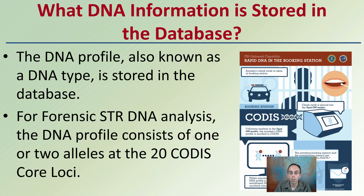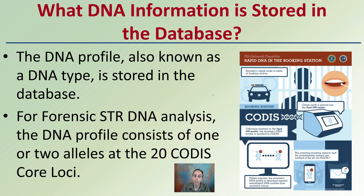What DNA information is actually stored in the database? The DNA profile, also known as a DNA type, is stored in the database. For forensics, STR — short tandem repeats — DNA analysis for a DNA profile consists of one or two alleles at the 20 CODIS core loci. This enables rapid DNA analysis at a booking station, being able to take a swab of someone and get that information into the database.